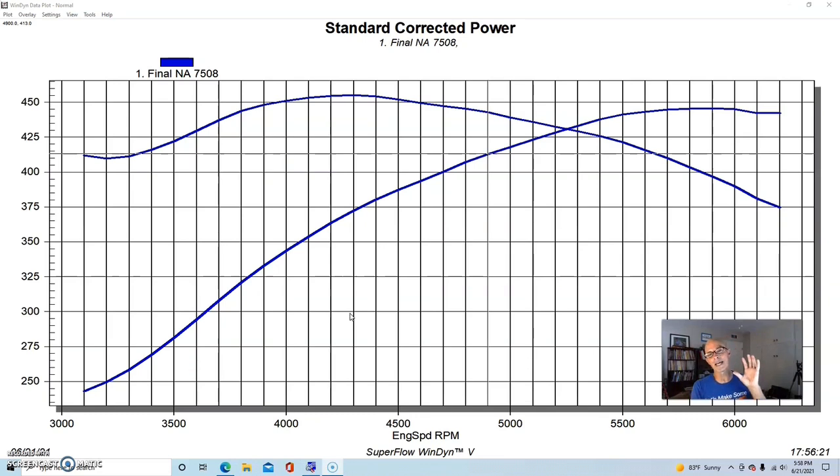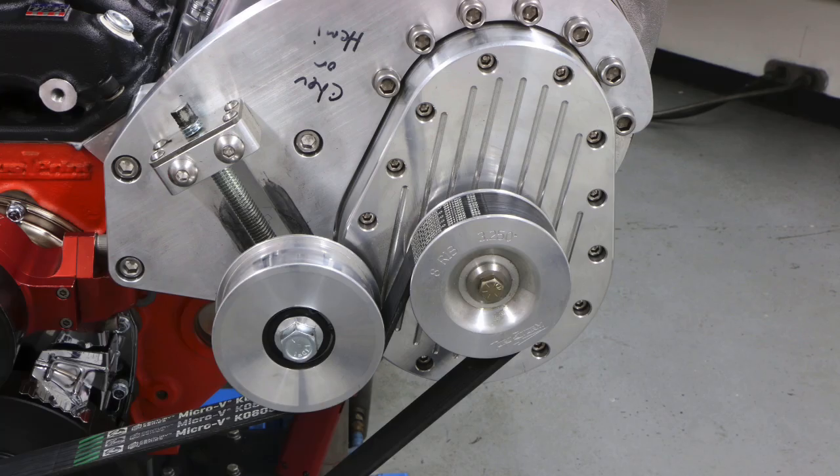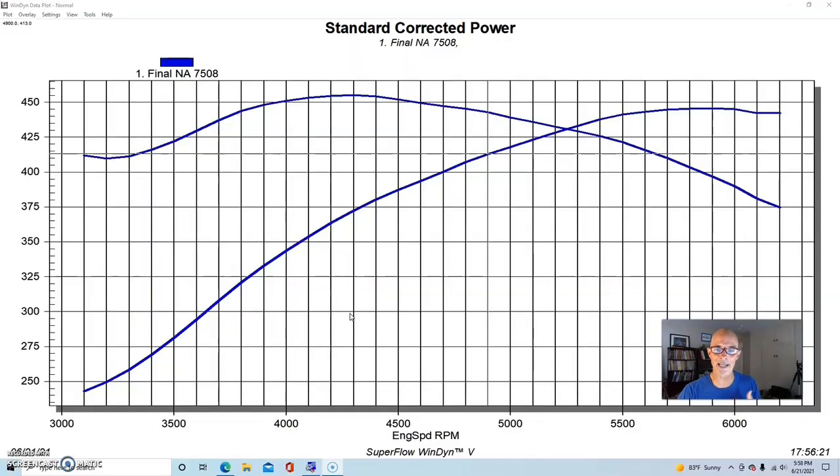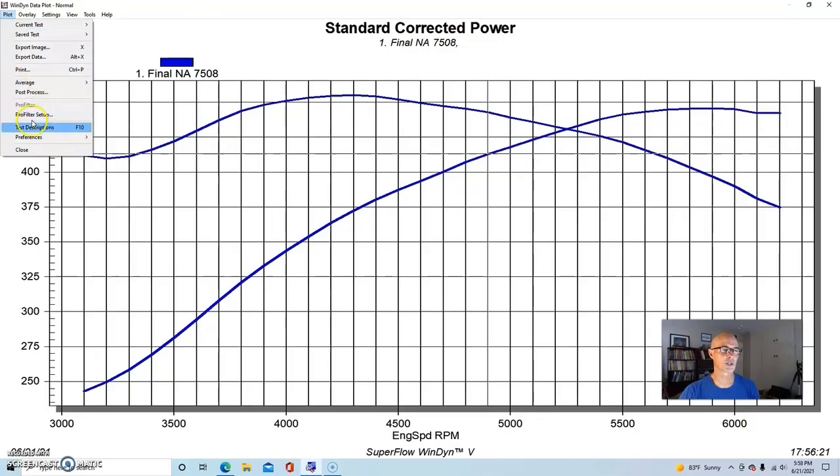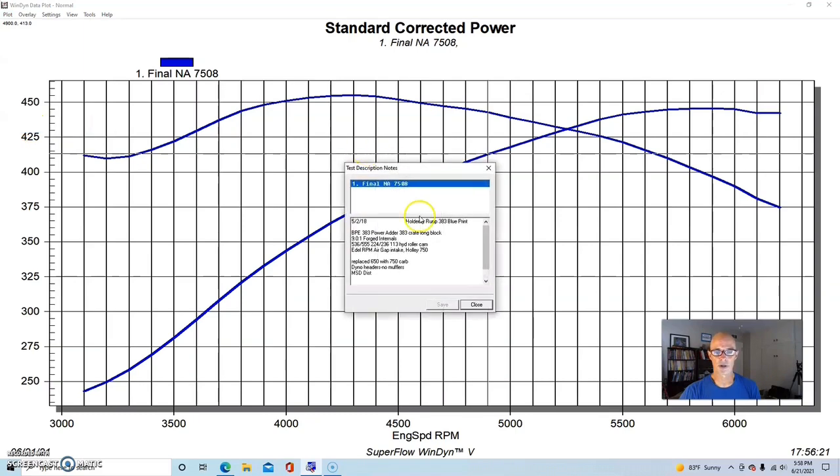Because it was a Power Adder crate motor, we added another power adder to it before we added the Torque Storm supercharger or the 671 blower. So what we did was add a quick shot of nitrous to it because it was already on the dyno and why not? Nitrous is so easy to add.